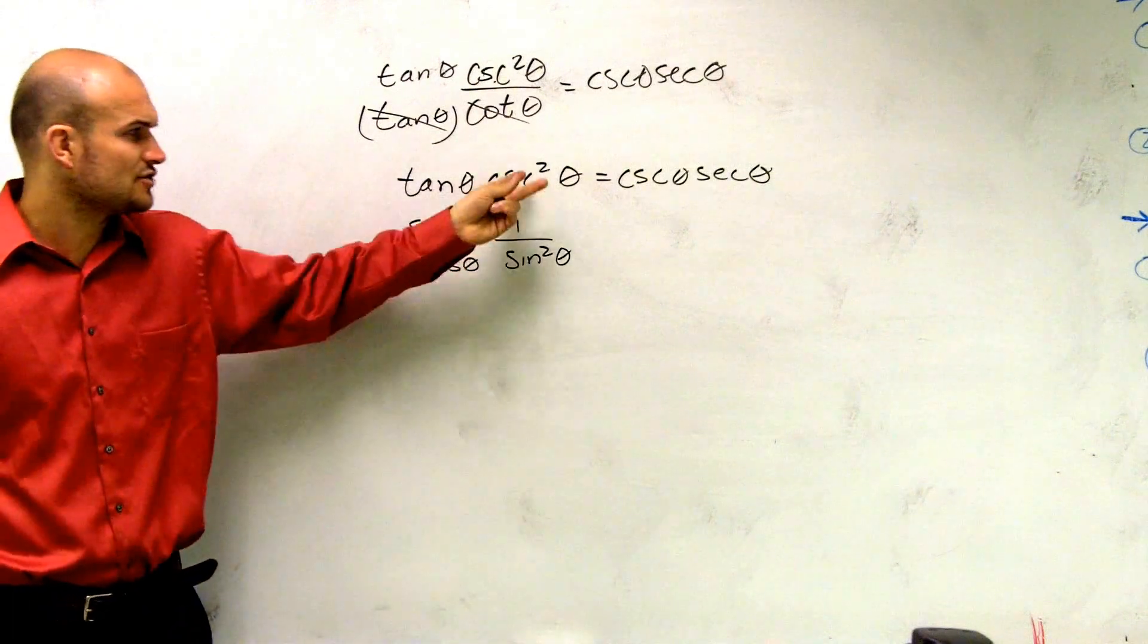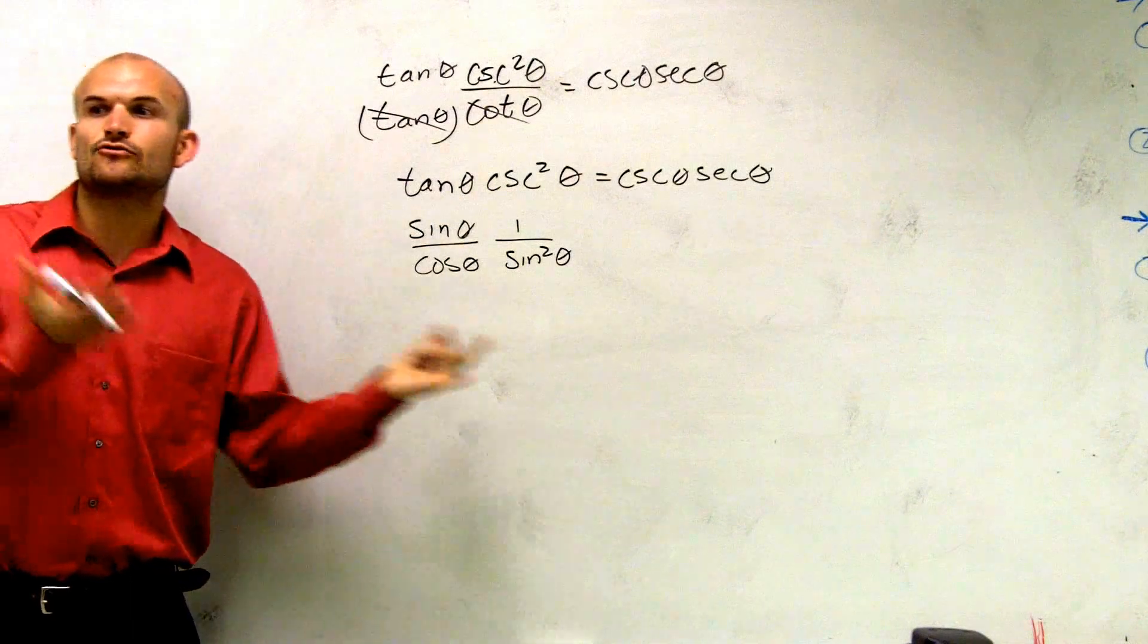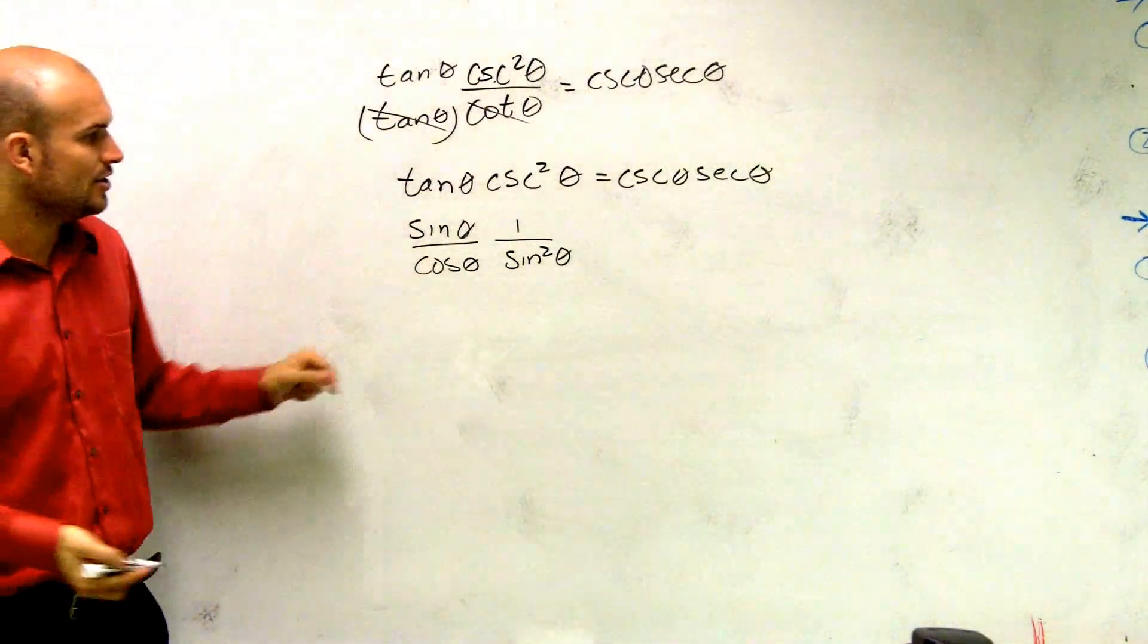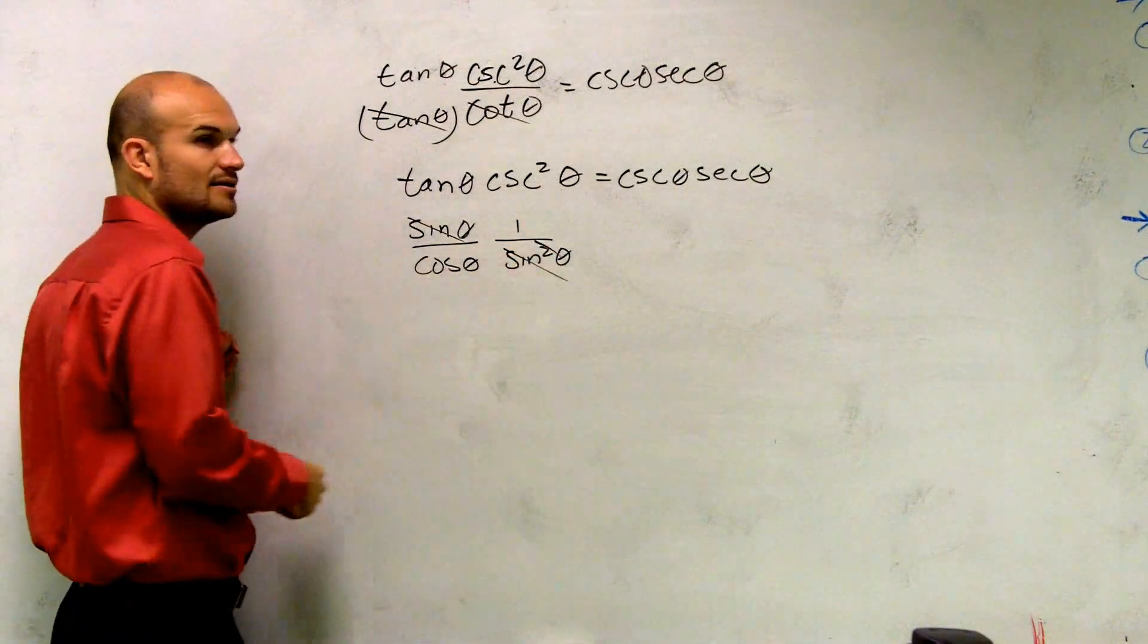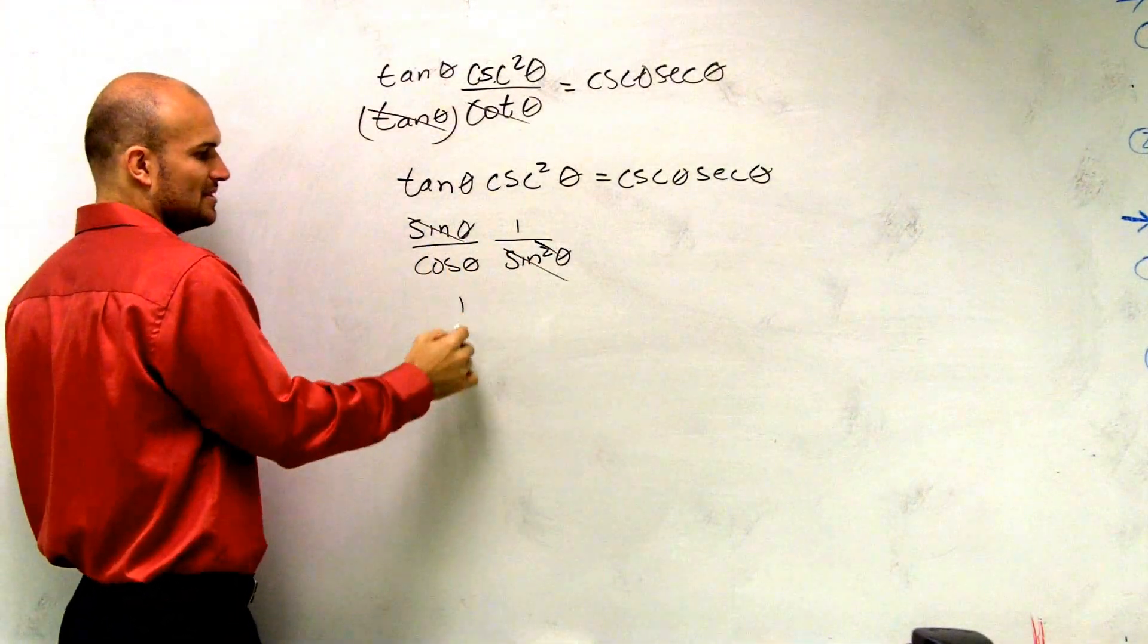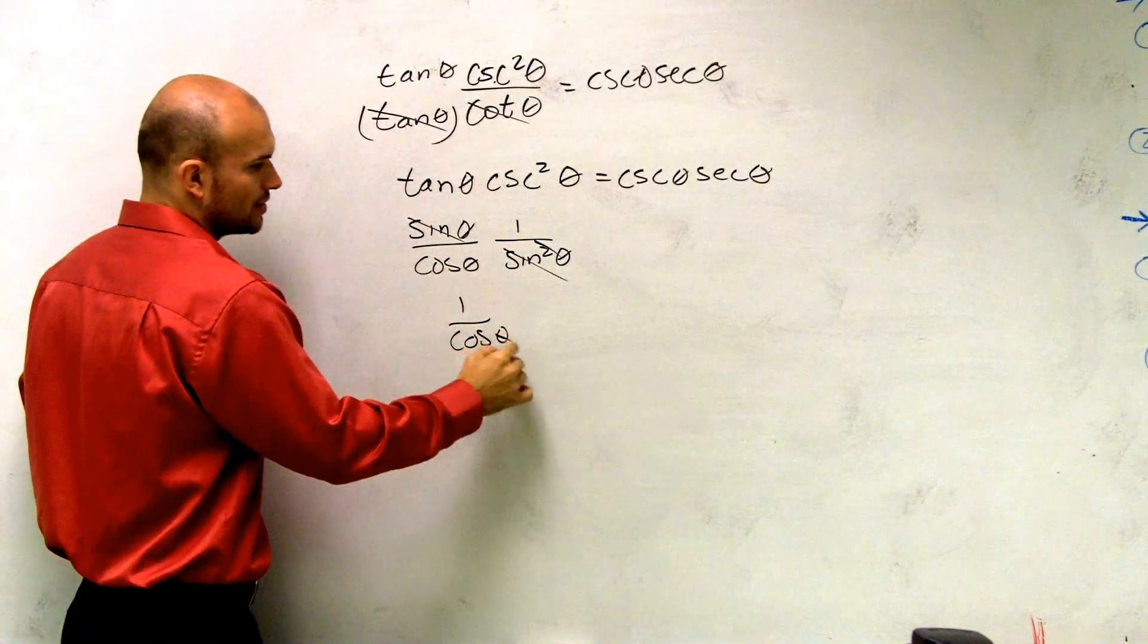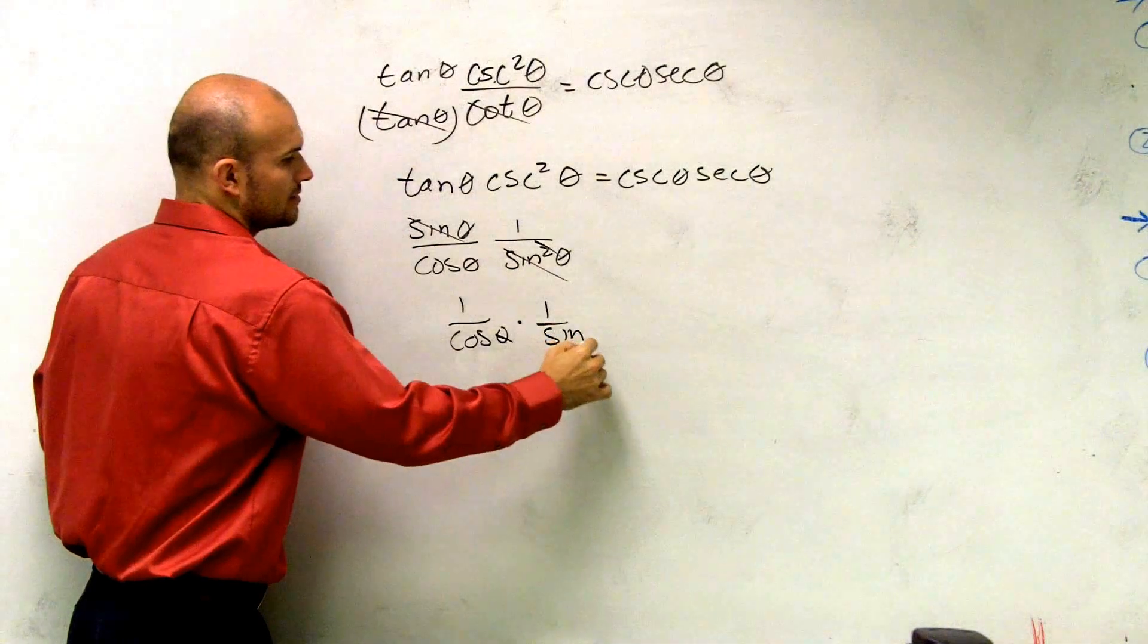Well, what I notice is my sines, right there, can cancel out. So if I was going to multiply these and cancel out, I could be left with 1 over cosine theta times 1 over sine theta.